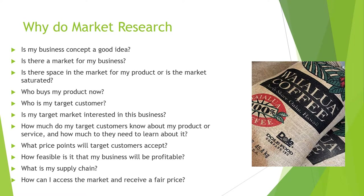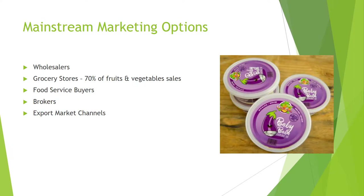There are several mainstream marketing channels for produce, including wholesale, retail grocery stores, mass merchandisers, shippers, packers, food service buyers, brokers, and export marketing channels. Keep in mind grocery stores sell the majority of fruits and vegetables — over 70 percent. When starting out, you may need to sell directly to friends, through a CSA, or at a farmers market, but as you grow you'll need access to more markets, and getting into grocery stores is the most popular route for growers throughout the United States.